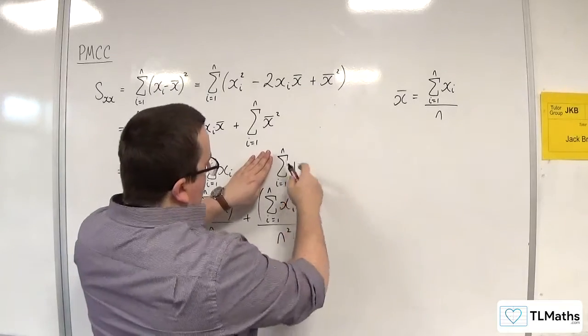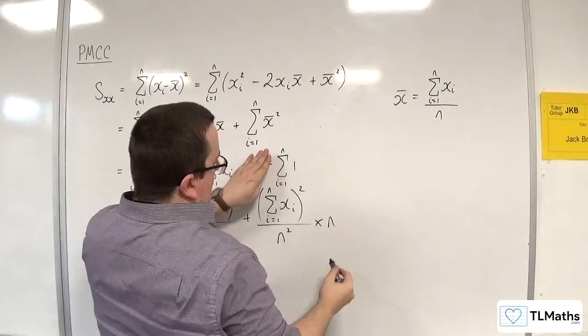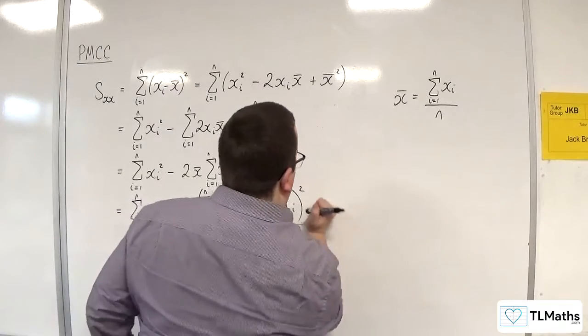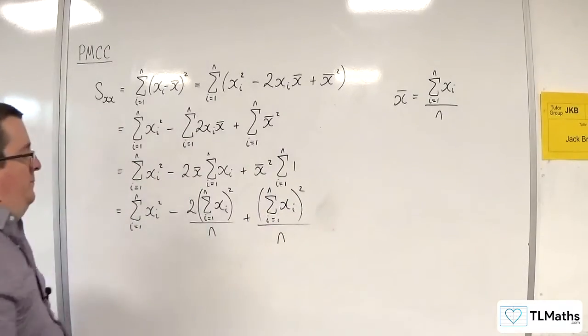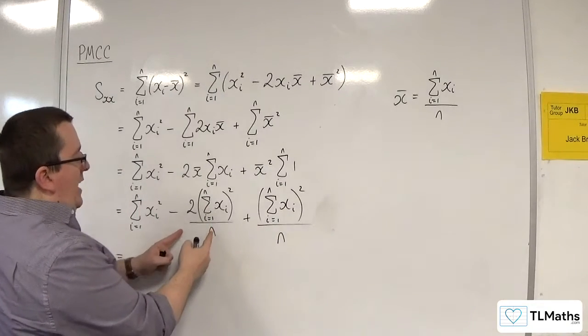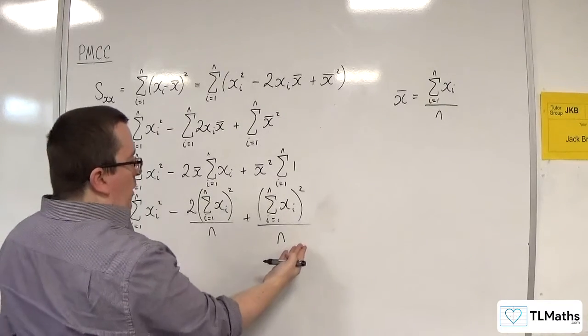So that n and one of those n's cancel, and I just get left with that. So I'm taking away two of them here, and I'm adding on one of them.